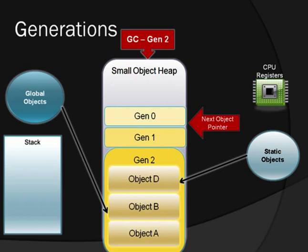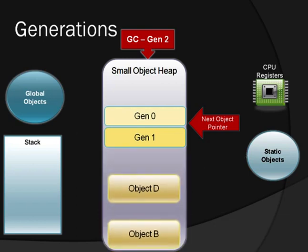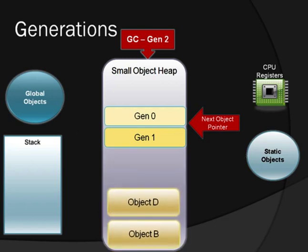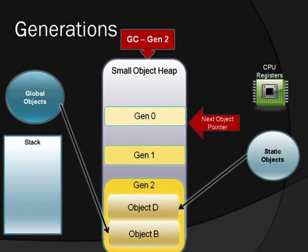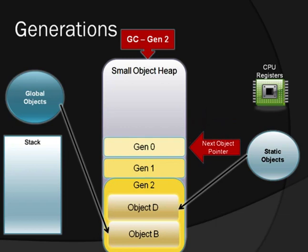What should happen here is the garbage collector will identify D and B as rooted objects and copy them over the rootless object A. The next object pointer will be reset, and because there are only three generations, objects D and B will remain in Gen 2. As you can see, the next object pointer is now set at the top of Gen 0, ready for the next allocation.